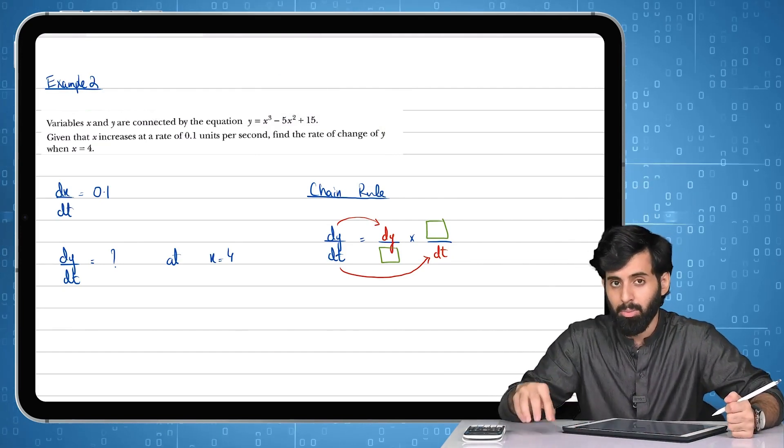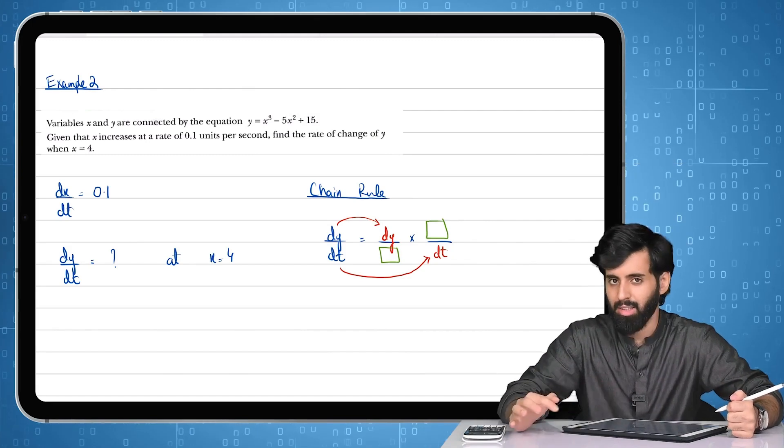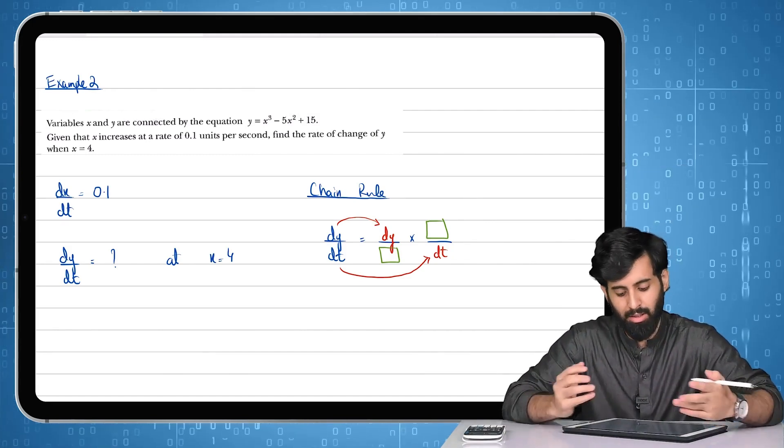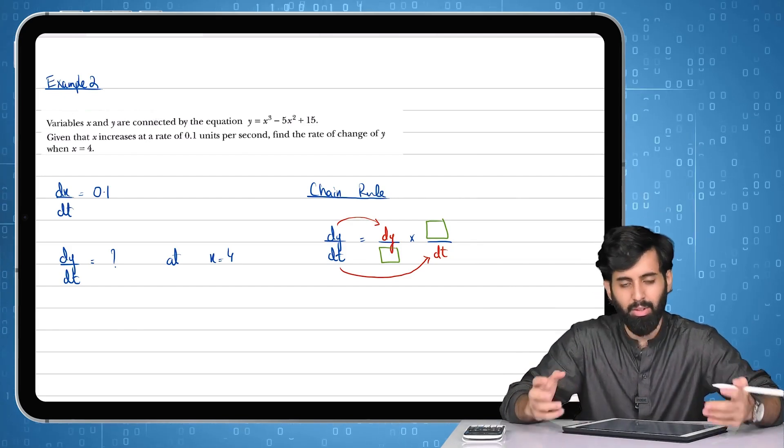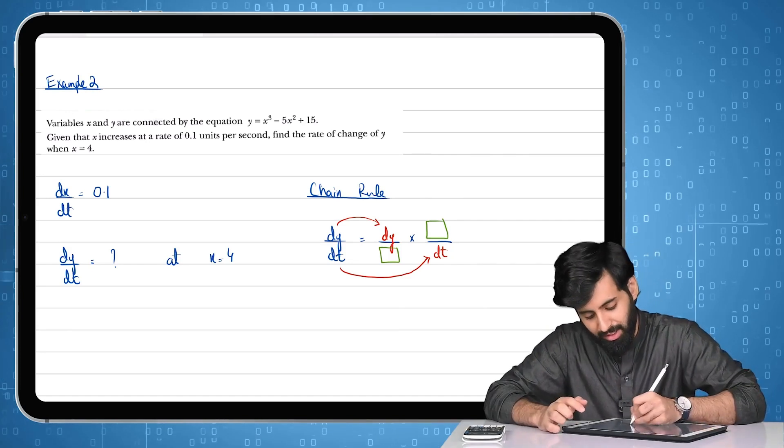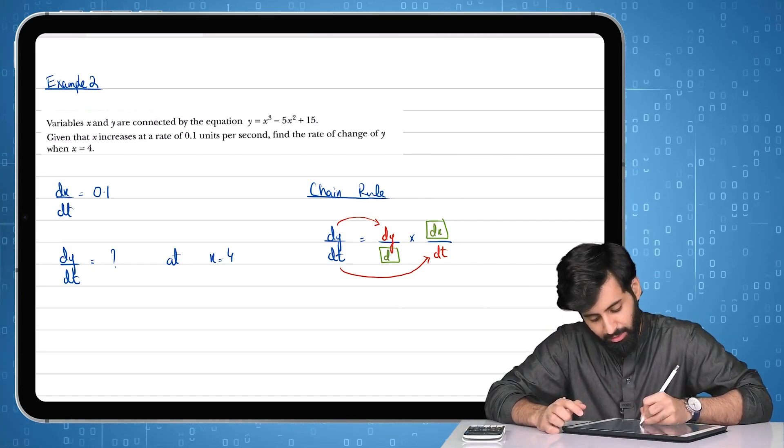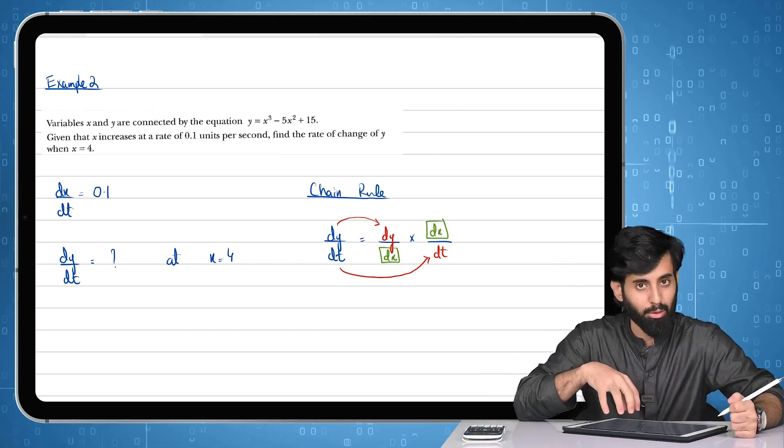That means it has to be relative to the question. So that means I can't write dv here. Why? Because ultimately they'll get cancelled out and you'll be left with dv/dy/dt. So I can't write dv here because we don't have dv in the question.